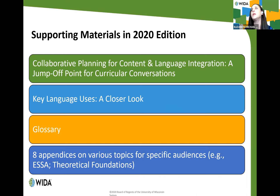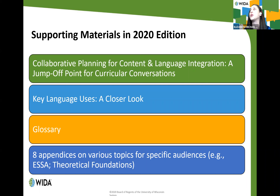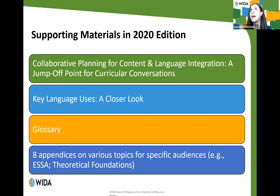There are many additional supporting materials in the 2020 edition. There is a section on collaborative planning for content and language integration, showcasing a hypothetical scenario where a seventh-grade science teacher works with an English language development specialist through a given unit — deciding on the standard, targeting key language uses, and walking through the planning process. It provides a map with guiding questions for content and language specialists planning together, supporting those collaborative conversations.